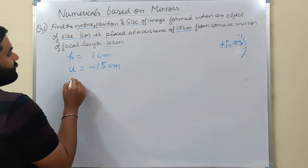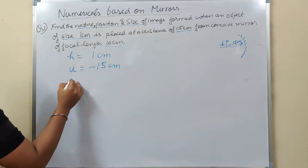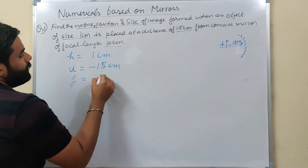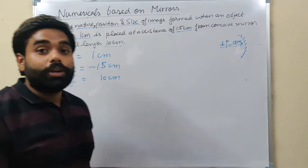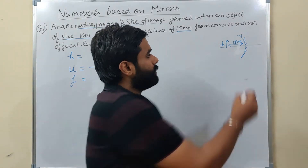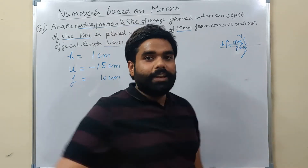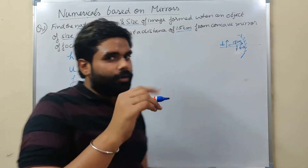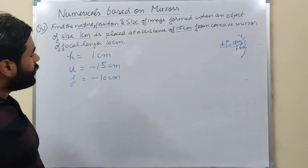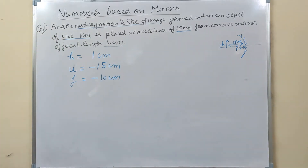From a concave mirror of focal length 10 cm. So focal length is 10 cm. Now, the focal length of a concave mirror is on the left side, so by sign convention, focal length f = -10 cm. We saw this in the second video.